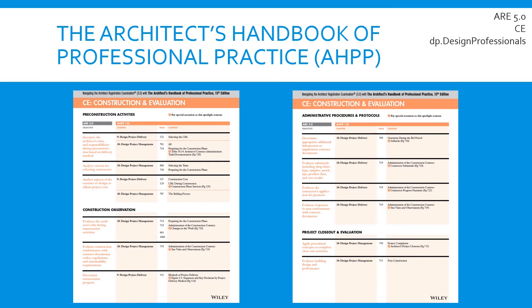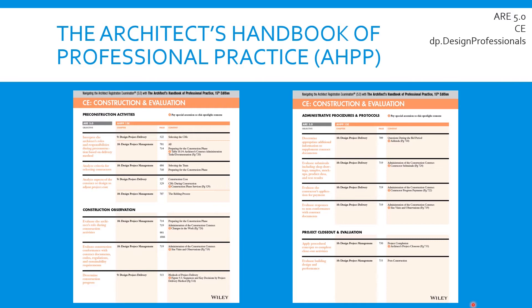Online there are several people who have posted guides for the Architect's Handbook explaining which sections and chapters you should read for a particular test. This one is by Wiley, and they've outlined the different chapters and content areas to read for this particular test — they have a sheet like this for every exam. I'm placing the link down below so you can download it. Definitely do not read every single page of the Architect's Handbook, as it is way too big and you'll get lost in the information. Only read the pages relevant to the CE exam.